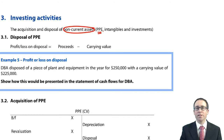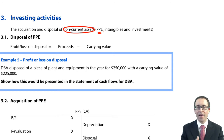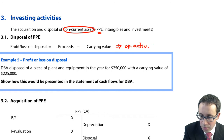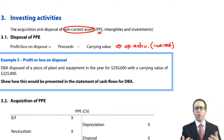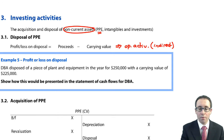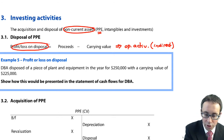The first thing to note is that although I refer to the disposal of PPE within investing activities, the profit or loss on disposal doesn't actually appear within the investing activities section. It actually appears within your operating activities, because using the indirect method of working out your cash from operations, you have to adjust for any non-cash expenses — and a profit or loss on disposal is non-cash.